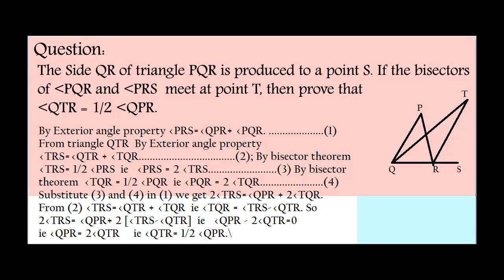Coming to the next question. Side QR of triangle PQR is produced to a point S. If the bisectors of angle PQR and angle PRS meet at point T, then prove that angle QTR equals half of angle QPR.